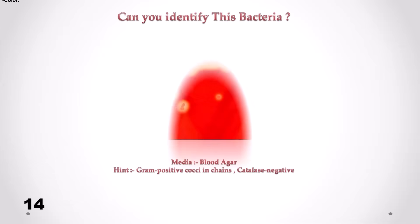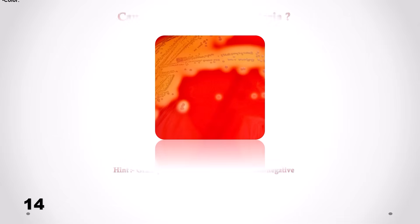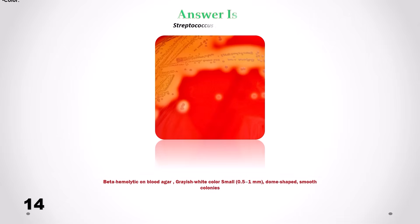Can you identify this bacteria? Correct answer is Streptococcus pyogenes. We can see beta-hemolytic, grayish to white color, small dome-shaped smooth colonies.